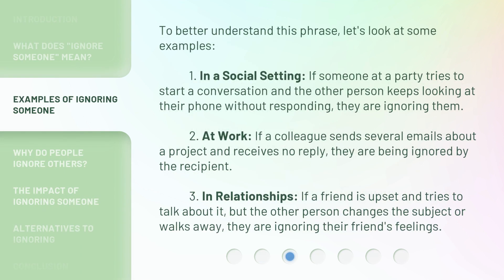To better understand this phrase, let's look at some examples. In a social setting, if someone at a party tries to start a conversation and the other person keeps looking at their phone without responding, they are ignoring them. At work, if a colleague sends several emails about a project and receives no reply, they are being ignored by the recipient. In relationships, if a friend is upset and tries to talk about it, but the other person changes the subject or walks away, they are ignoring their friend's feelings.